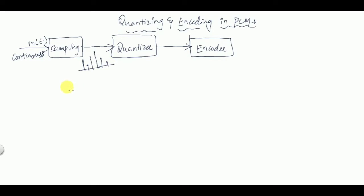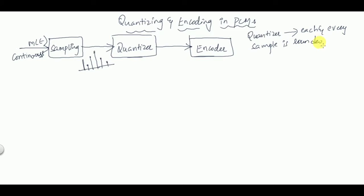The sampled signal is then quantized. What does the quantizer do? In the quantizer, each and every sample is rounded off to its nearest quantization level.